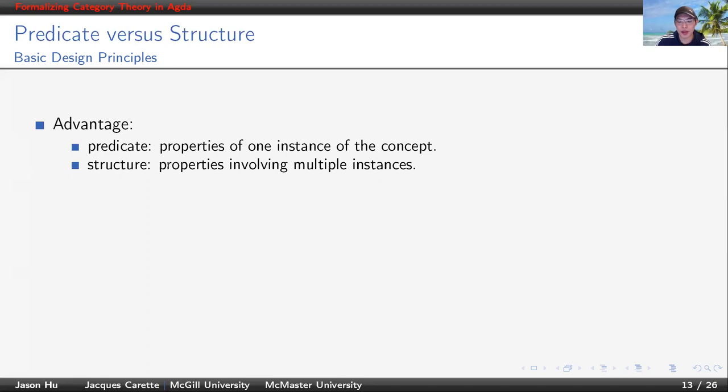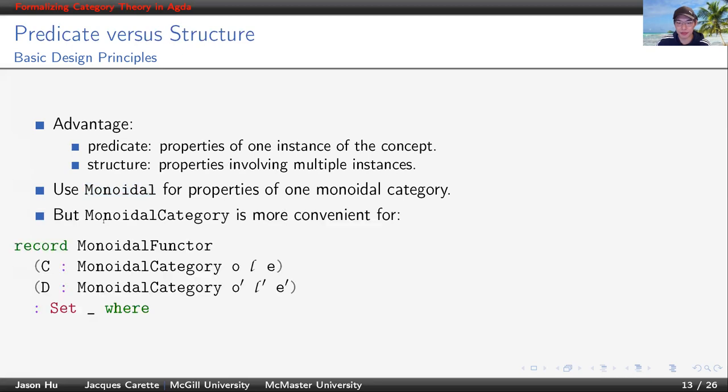We use different styles depending on the situation we face. We realize predicate style is better for properties about one instance of a concept, while the structure style is better for properties involving multiple instances. When we prove properties about one monoidal category, we use the predicate style monoidal. When multiple monoidal categories are involved, we use the structure style.